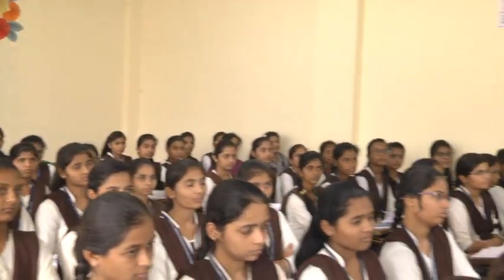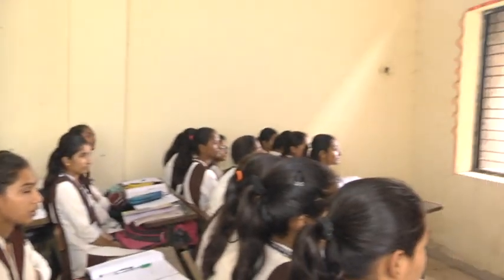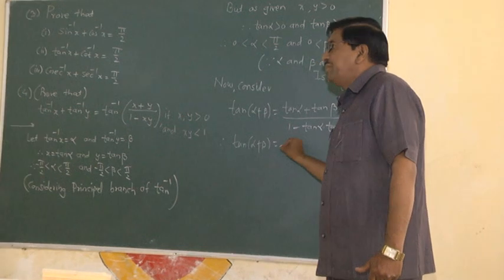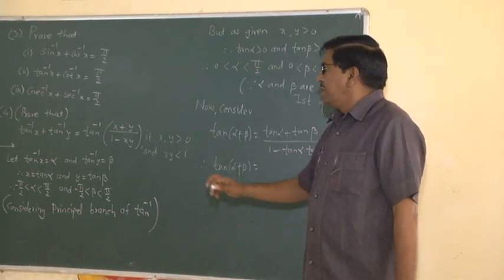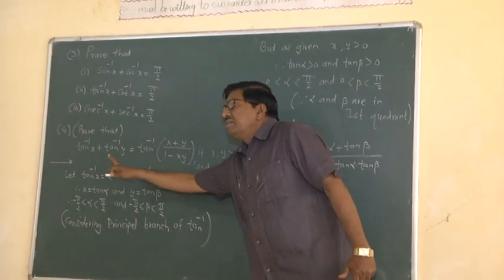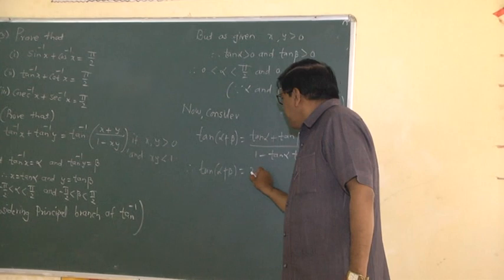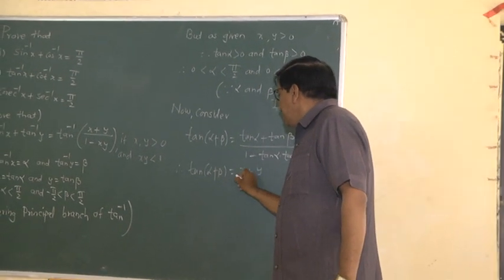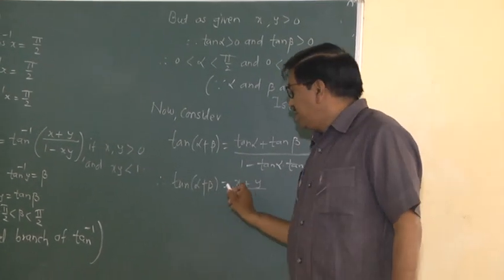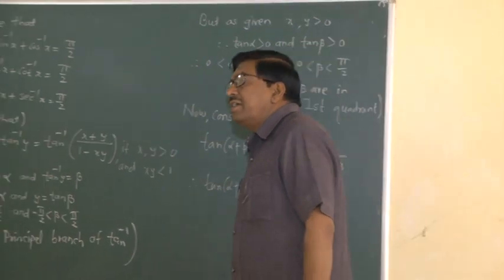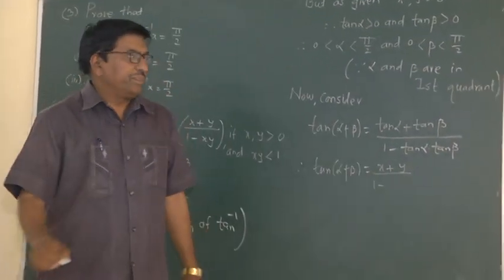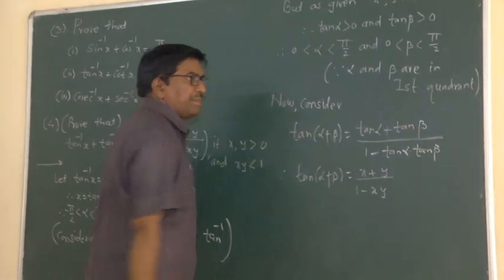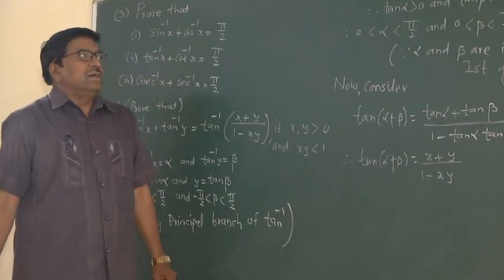Now therefore, tan(alpha plus beta) equals tan alpha plus tan beta, which means x plus y, upon 1 minus x into y.